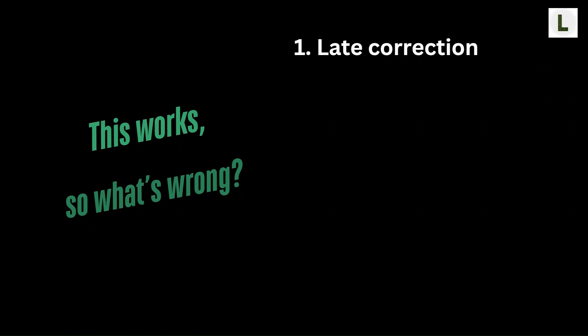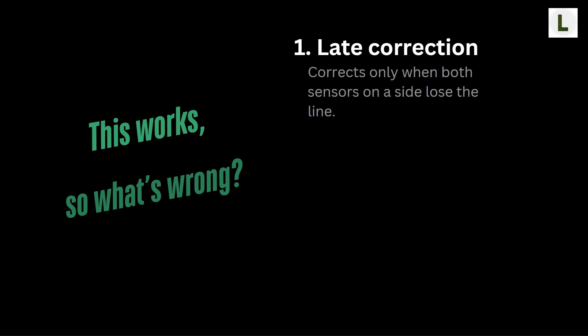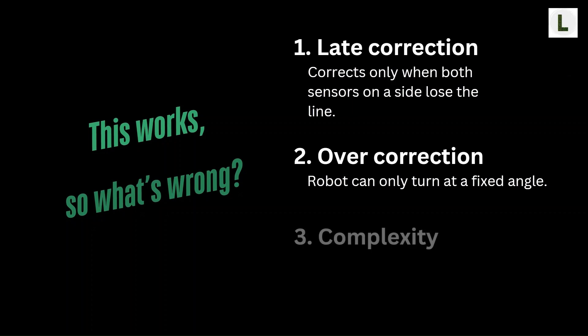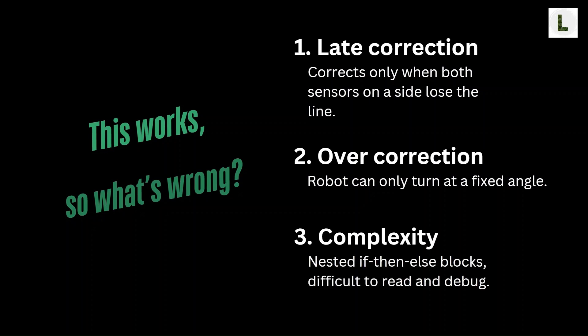Our simple line follower works, but it has three big problems that we can fix. First is late correction — the robot corrects its path too late, because the logic only commands a turn when both sensors on one side lose the line. Second is overcorrection — the robot can only turn at a fixed angle, like a car with just three steering options: straight, left, or right. This causes zigzag motion and unstable tracking. Third is the complexity of the code — the program has multiple nested if-then-else blocks, making it harder to read and debug.